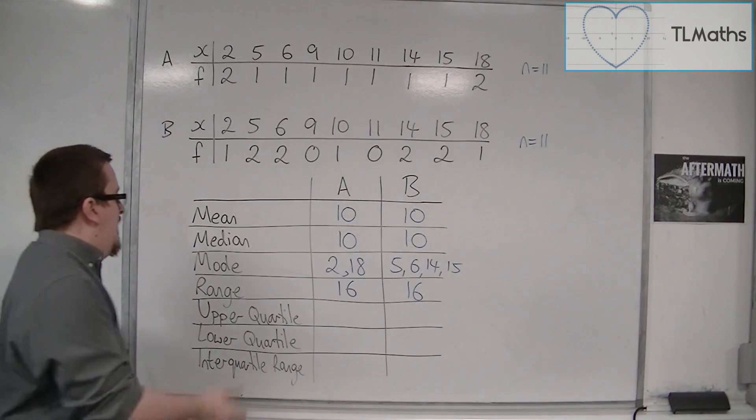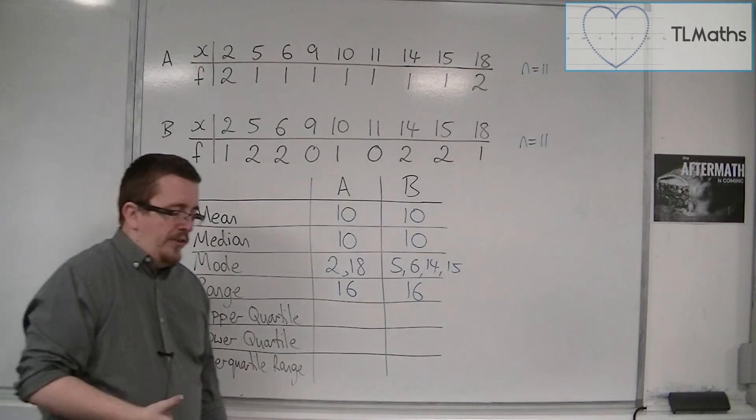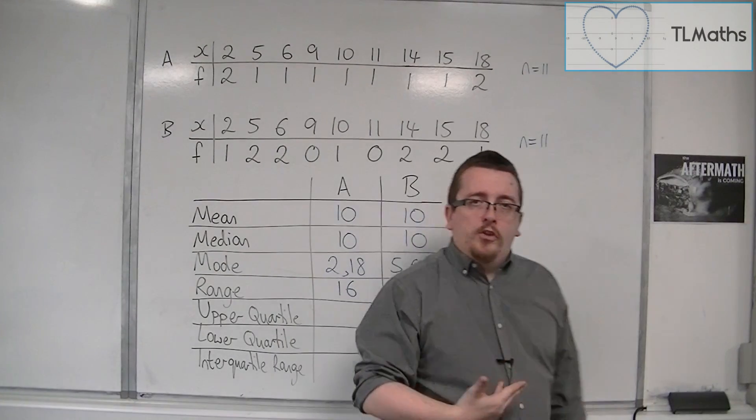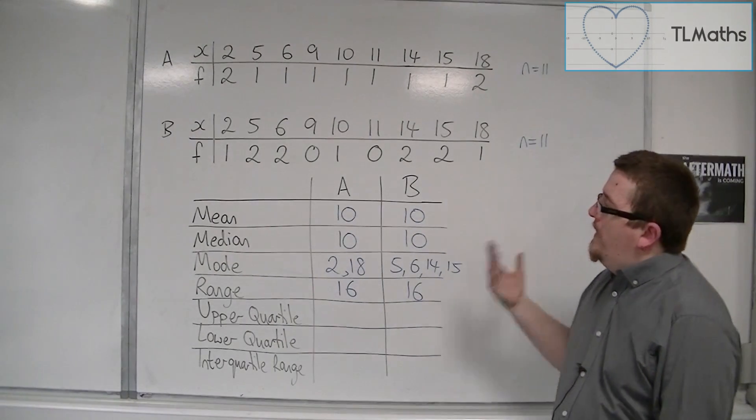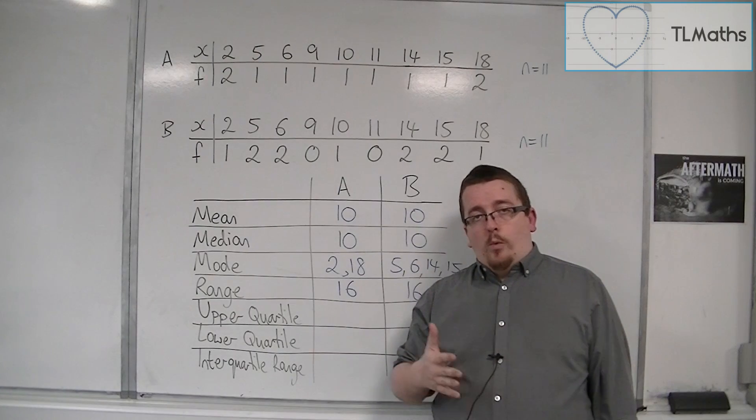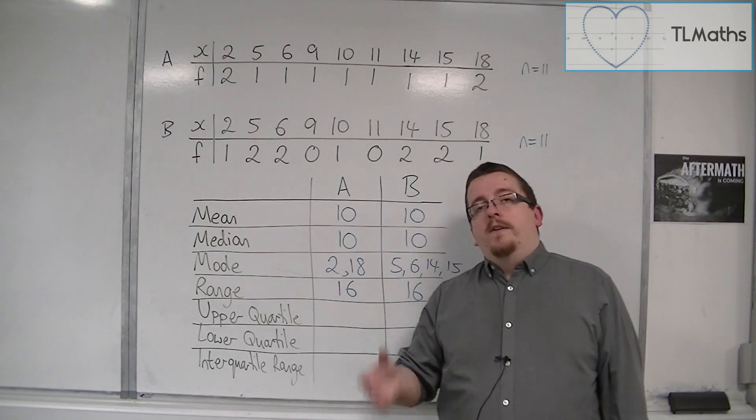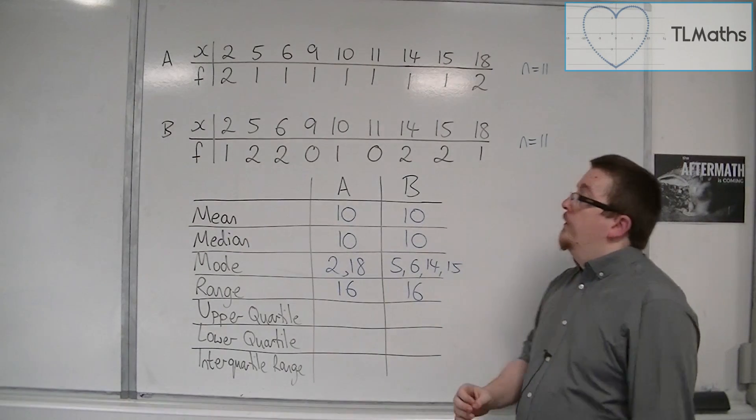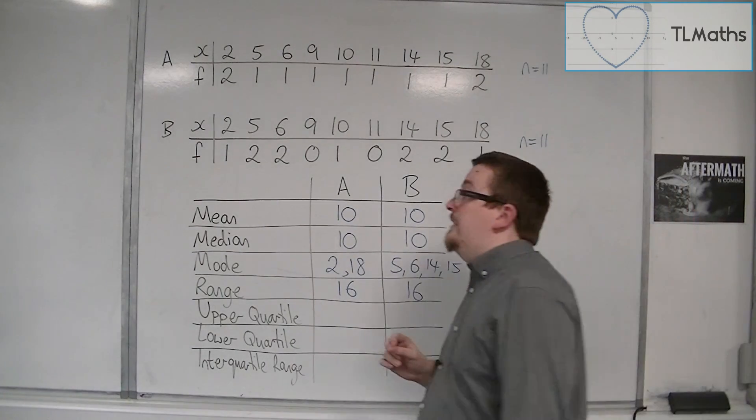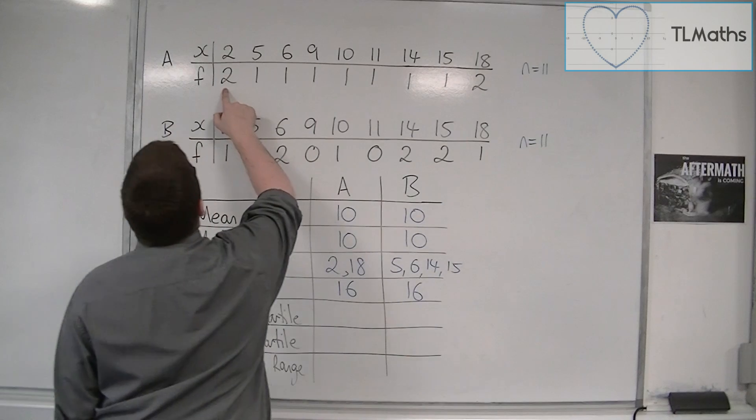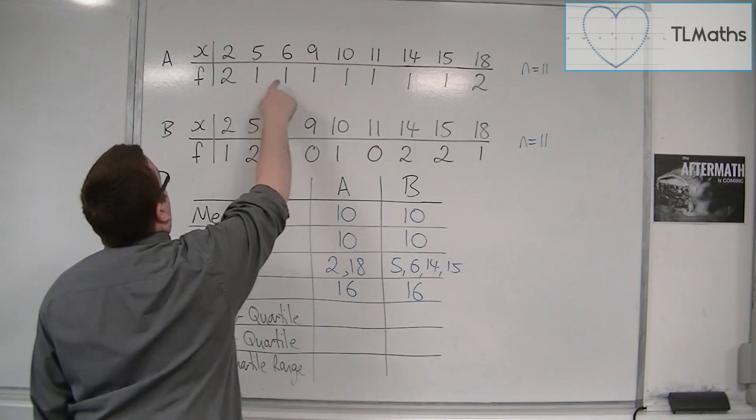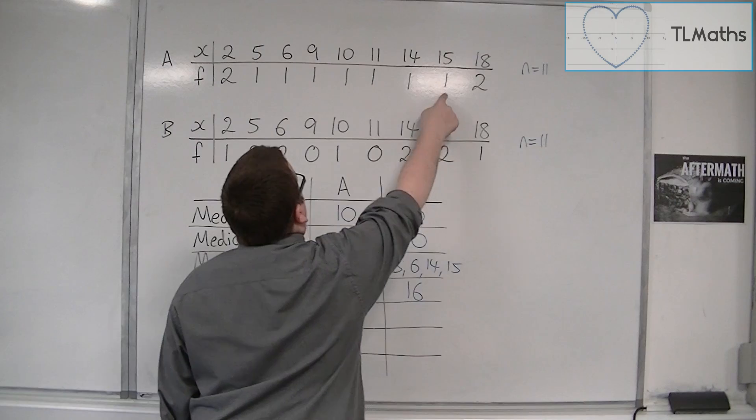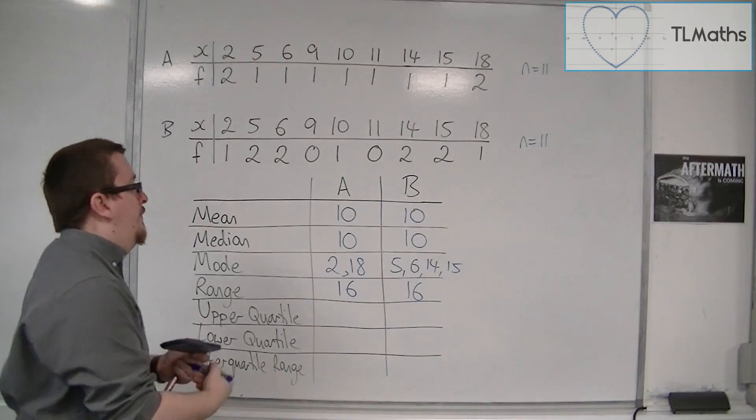Now, how about the upper quartile? Well, the upper quartile is 3 quarters of the way along. So we've got 11 bits of data. Add 1 gets us 12. Now, 3 quarters of 12 is 9. So we're looking for the ninth bit of data. So we've got 2, 3, 4, 5, 6, 7, 8, 9. And so the ninth bit of data is 15.